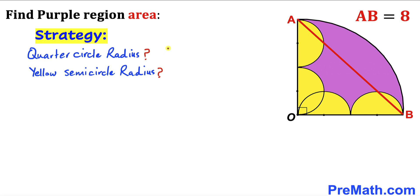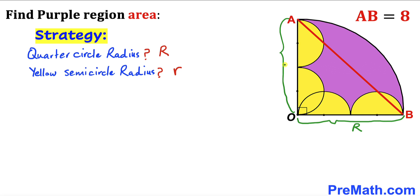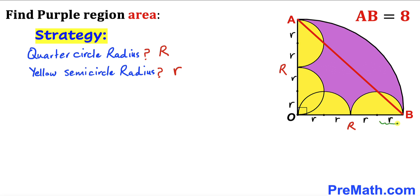Let's label the radius of the big quarter circle as uppercase R and the radius of the yellow semicircle as lowercase r. Therefore OB is the radius of the quarter circle, so this is uppercase R. Likewise, AO is the radius of the quarter circle as well, so this is also uppercase R. The radii of the yellow semicircles are lowercase r.